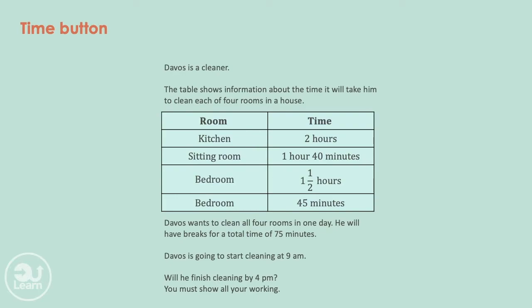Davos is a cleaner. The table shows information about the time it will take him to clean each of four rooms in a house. The kitchen will take 2 hours, the sitting room takes an hour and 40 minutes, the bedroom takes an hour and a half, and the second bedroom will take 45 minutes. Davos wants to clean all four rooms in one day. He'll have a break of a total time of 75 minutes. Davos is going to start cleaning at 9 am. Will he finish cleaning by 4 pm? You must show all your working.